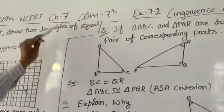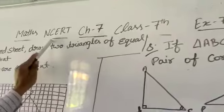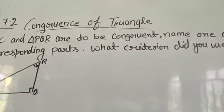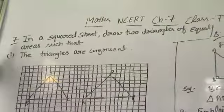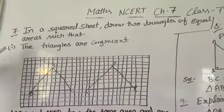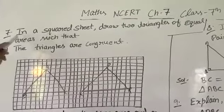Good afternoon class 7th students. Now we are continuing NCERT Chapter 7, Exercise 7.2, Congruence of Triangles. In the previous video we have done till question number 6. Now we are continuing from question number 7 to the end of this exercise.